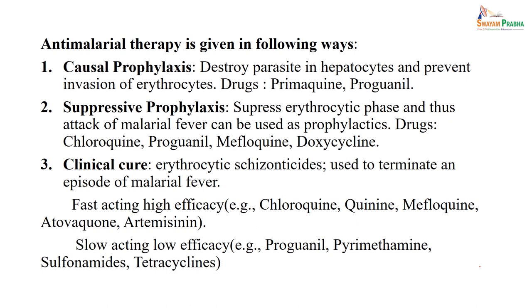When talking about management of malaria, anti-malarial therapy is given in the following ways. For those wanting to visit endemic areas, you give prophylactics — casual prophylactics — which destroy parasites in hepatocytes and prevent invasion into erythrocytes. Drugs used include primaquine or proguanil. You must take a history of G6PD deficiency because primaquine can cause hematuria and hemolytic anemia. Suppressive prophylactics suppress the erythrocytic phase and thus reduce malarial fever — drugs used include chloroquine, proguanil, mefloquine, or doxycycline.